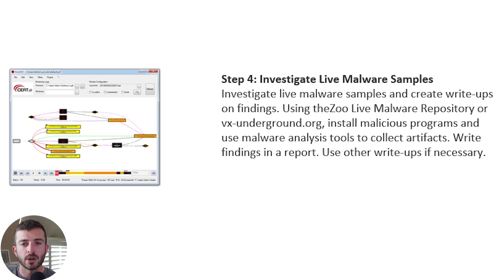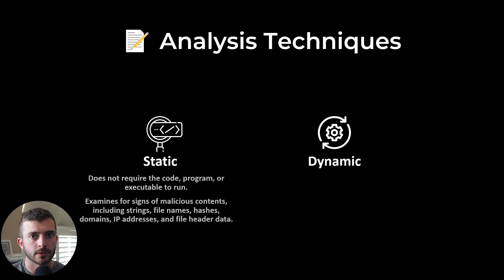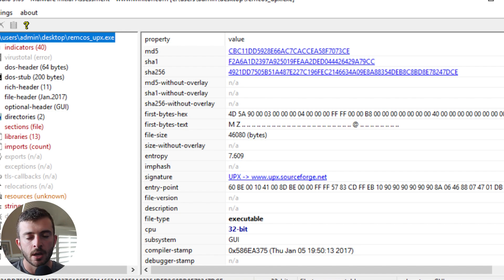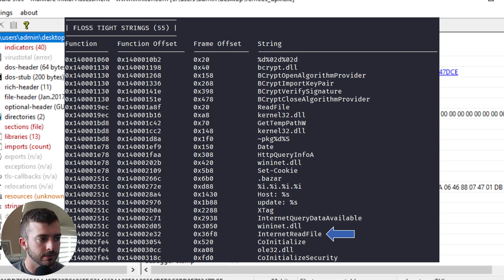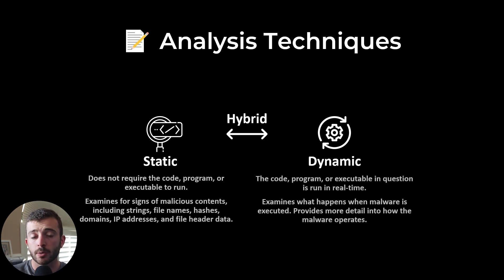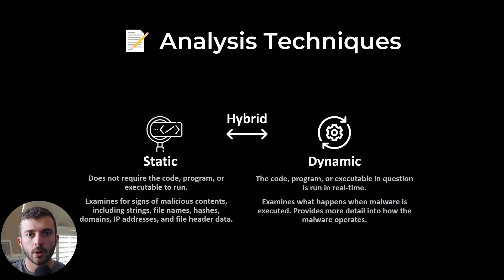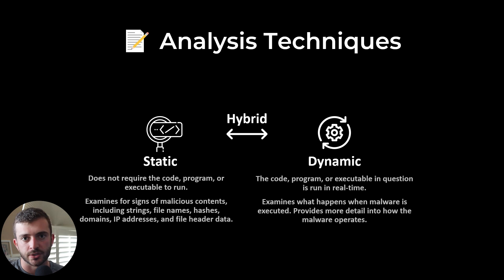There are really two different types of malware analysis techniques: static and dynamic. Both methods offer an assortment of information and telemetry about what's happening within malware. Static analysis doesn't require the code or program to execute — you're gathering information such as the file hash, header, file name, hard-coded strings, and IP addresses. Dynamic analysis involves running the program or executable in a safe sandbox and examining what happens when it is executed, to understand its behavior. Ultimately you combine both techniques to produce hybrid analysis.